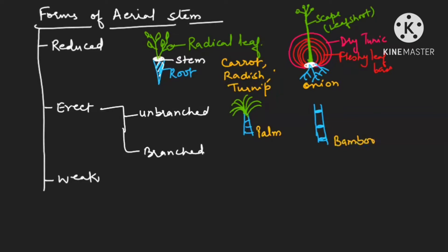In bamboo, the nodes are solid but the internodes are hollow. In the olden days teachers used to carry bamboo sticks — when hitting from the internodal area, which is hollow, it would not create much harm. Such unbranched stems: in the palm it is known as caudex, and in bamboo it is known as culm.